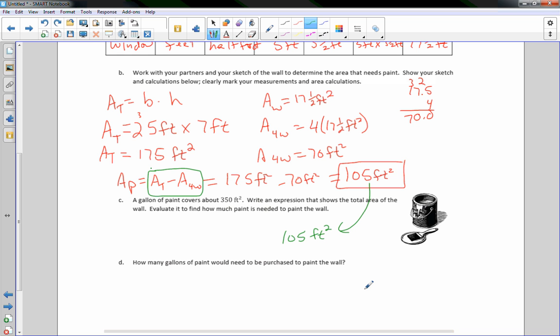Now it says how many gallons of paint would need to be purchased to paint the wall? All right. So what I need to do is calculate how much of this gallon we need, because we're going to need less than a gallon, because there's 350 square feet per gallon. How much of this gallon are we going to need? So we have 105 feet squared. And one gallon of paint will cover 350 feet squared. So if I reduce that, I'm going to divide top and bottom by five. That would be 21 over 70.